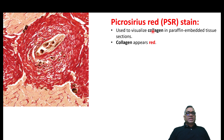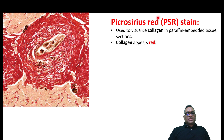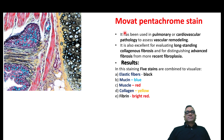There is another stain called Picro-Sirius red stain (PSR). Picro-Sirius red stain is again used for collagen, and collagen will be red in color. You can see around the blood vessel the collagen is there, and all the red color is the collagen in the Picro-Sirius red stain. Remember: Picro-Sirius red stain — color of the collagen will be red.